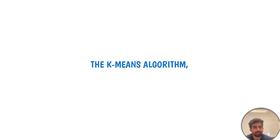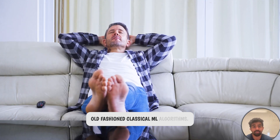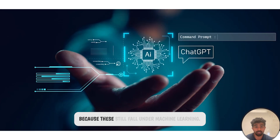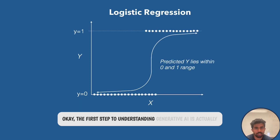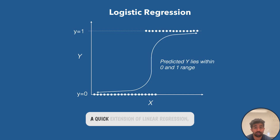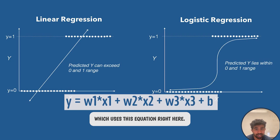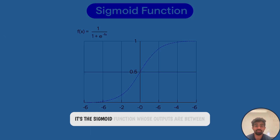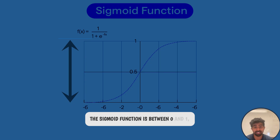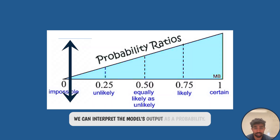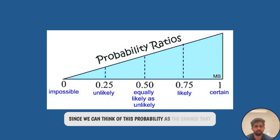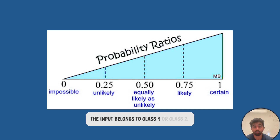We still have to cover the K-means algorithm, but let's take a quick break to talk about neural networks and generative AI, since these still fall under machine learning. The first step to understanding generative AI is actually logistic regression. Logistic regression is a quick extension of linear regression — we take the standard linear equation and add a sigmoid function whose outputs are between zero and one. Because the output is between zero and one, we can interpret it as a probability, which is super useful for classification — we can think of this probability as the chance that the input belongs to class one or class two.